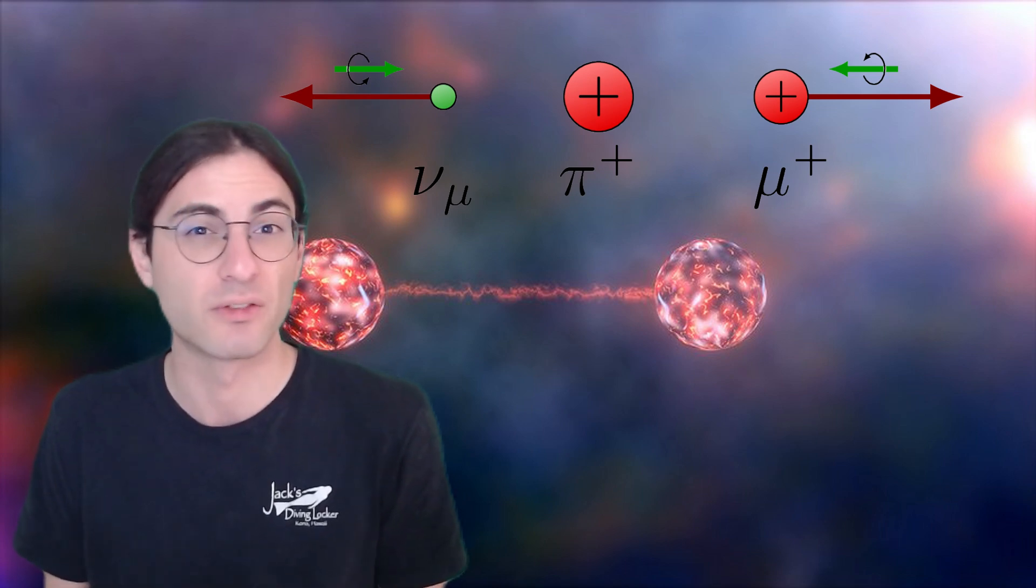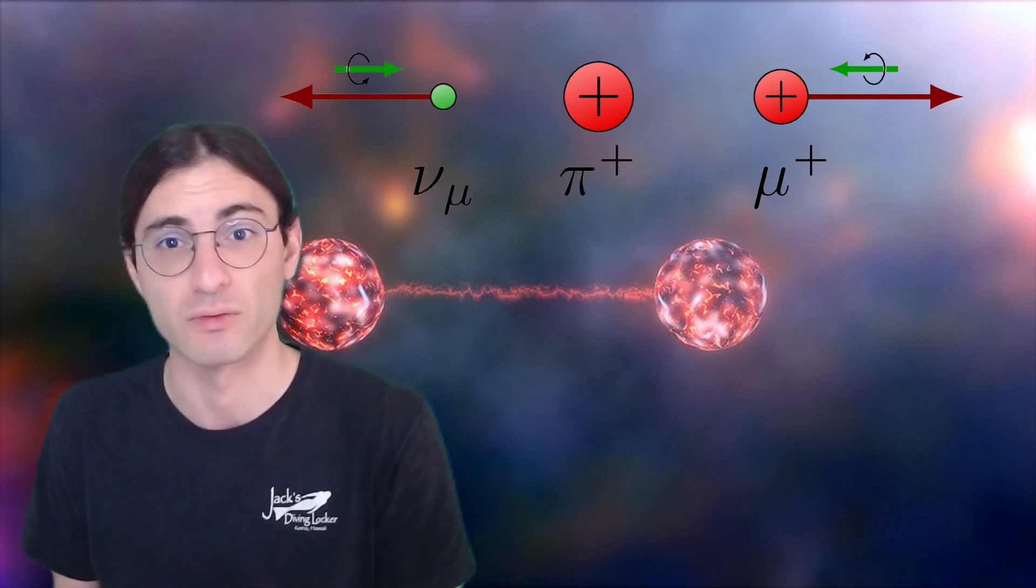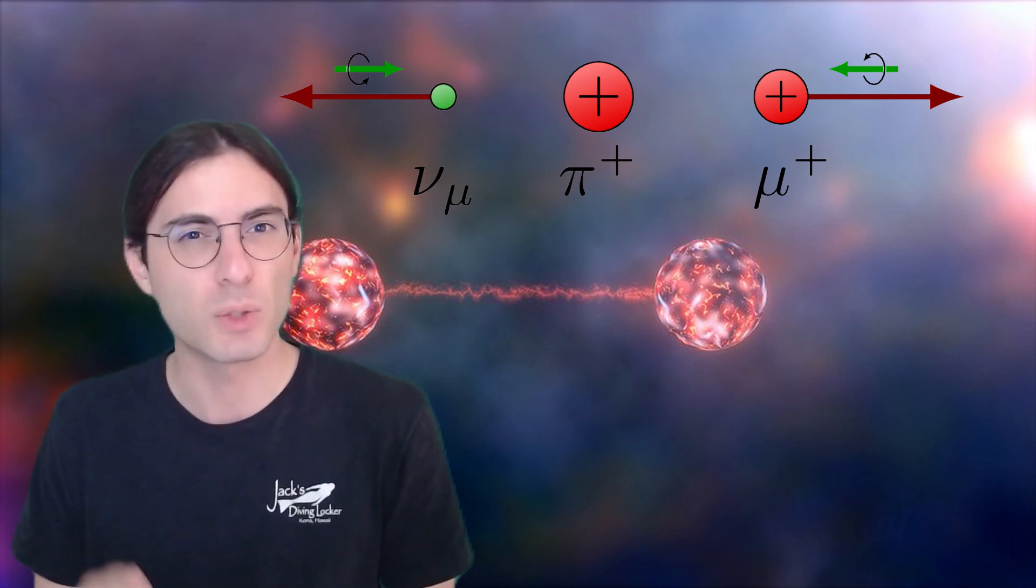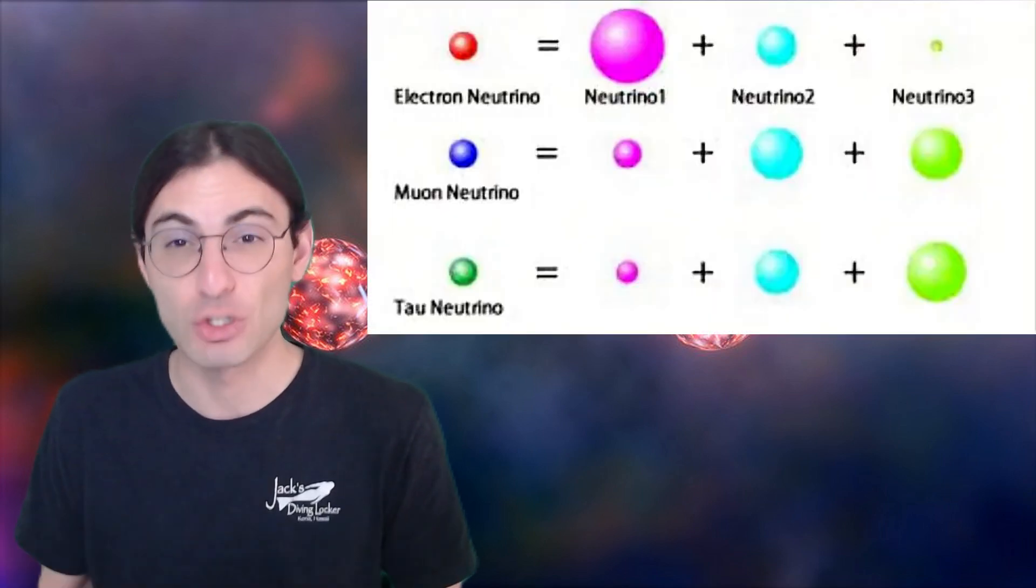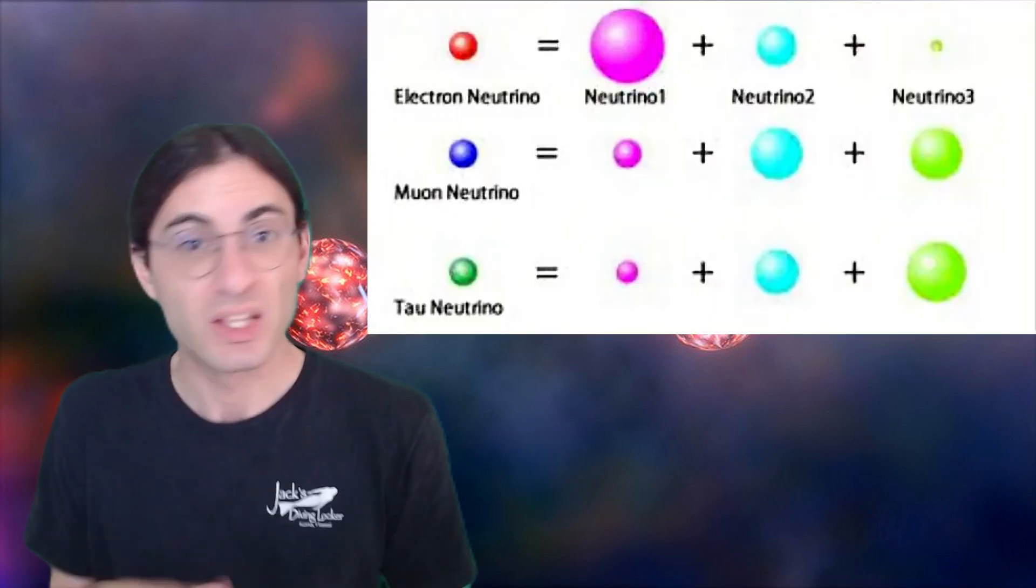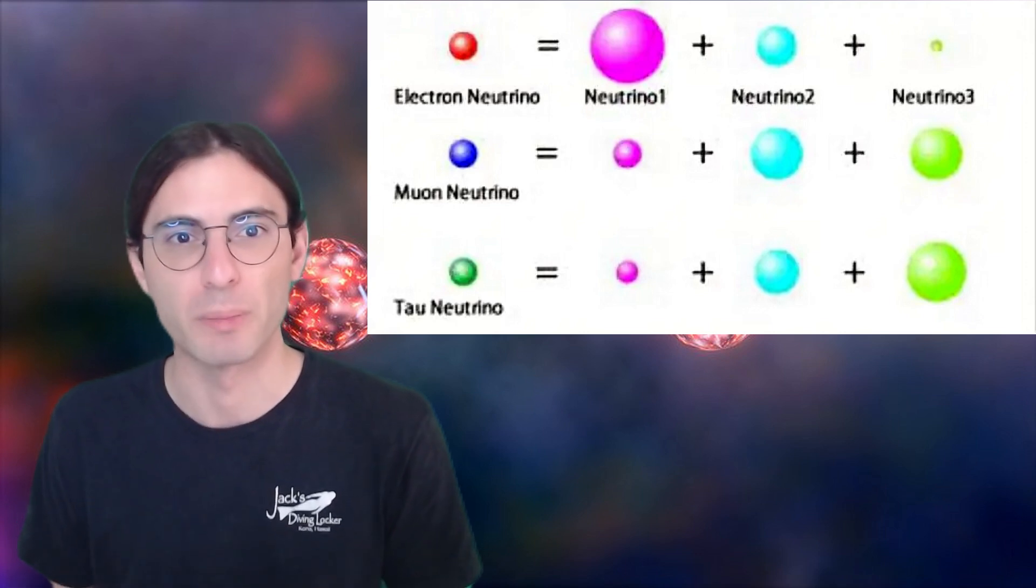The antimuon has a mass of around 105 mega-electron volts. The trouble is, the muon neutrino doesn't have a well-defined mass. If you could weigh the muon neutrino, you wouldn't get the same answer every time. It's in a superposition of three values. This is the result of a phenomenon called neutrino mixing.